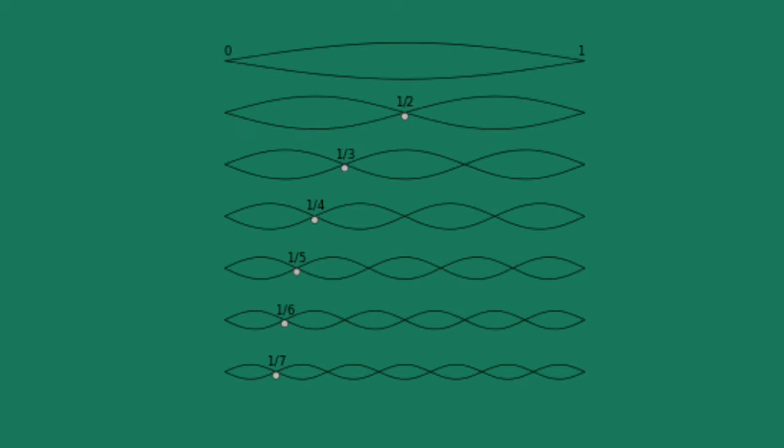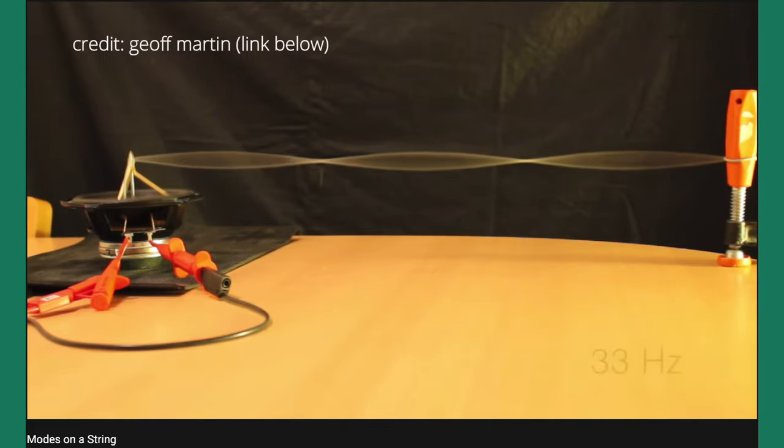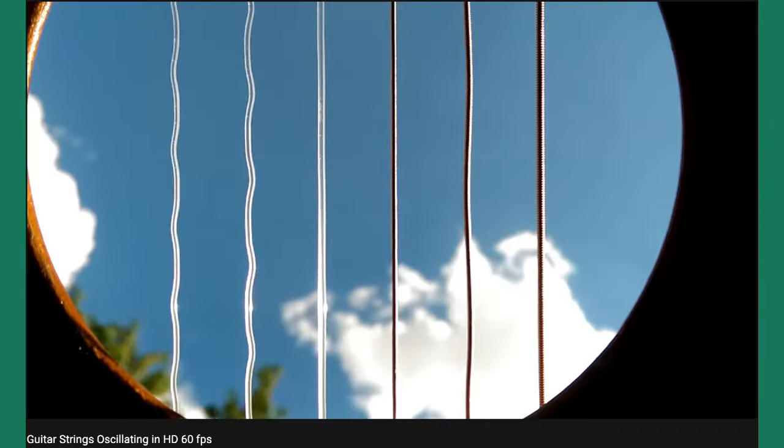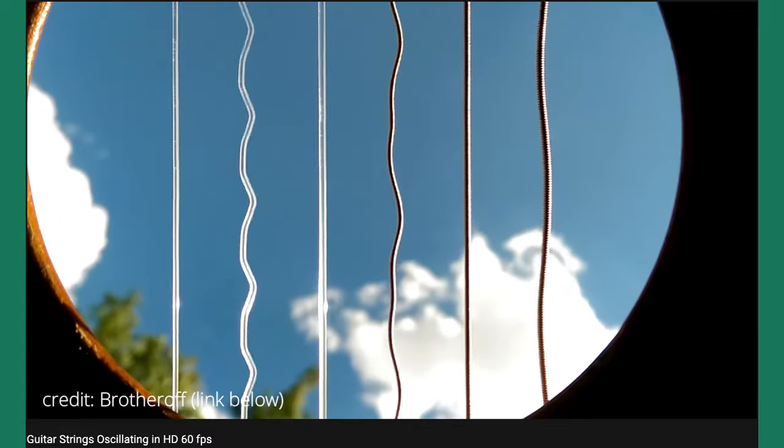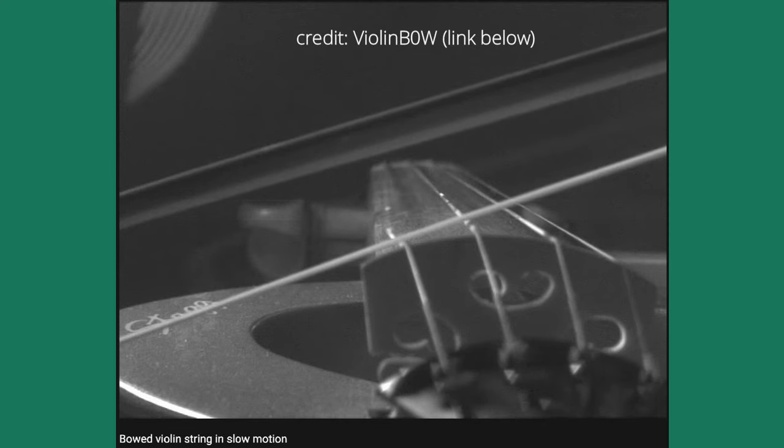This pattern continues into divisions and pitches that the human ear can't even pick up on, and the vibrations themselves are so small and fast that we can barely see them. What we do see, even in slow motion, is the sum of all these vibrations.